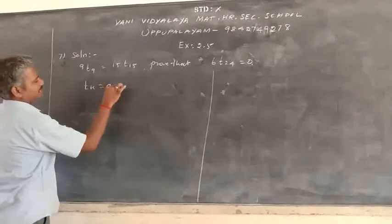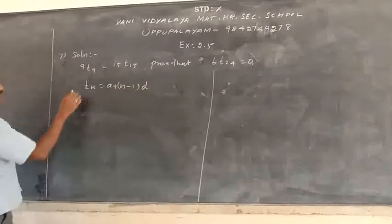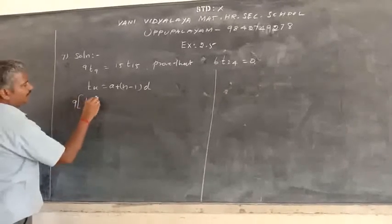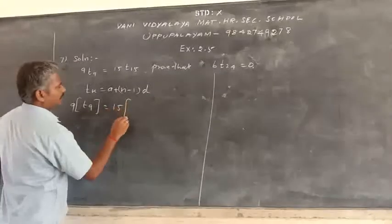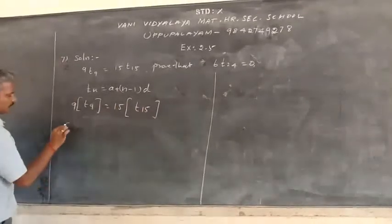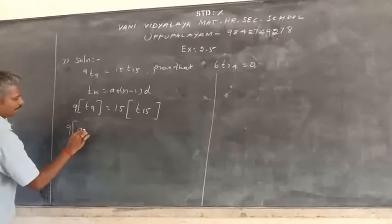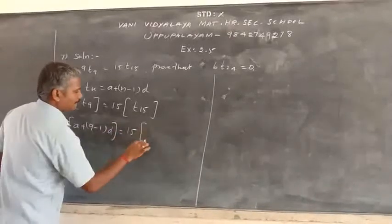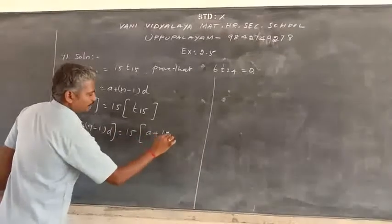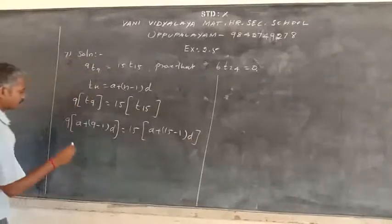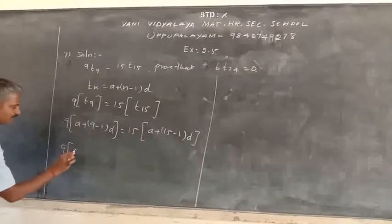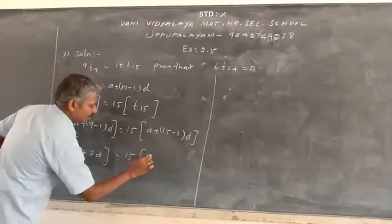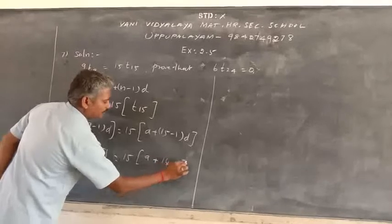TN equal to A plus N minus 1 into D. So by given condition, 9 into T9 equals 15 into T15. So 9A plus 9 minus 1 into D is equal to 15A plus 15 minus 1 into D. So 9A plus 8D equals 15A plus 15 minus 1 into 14D.